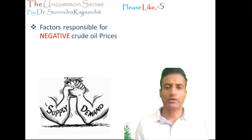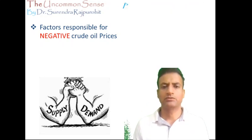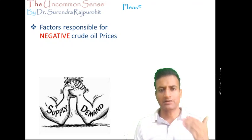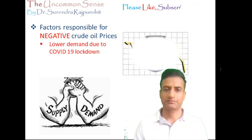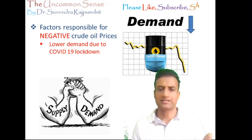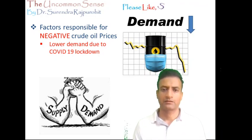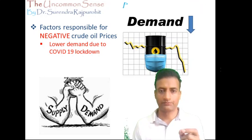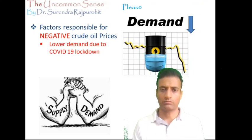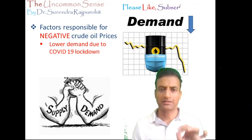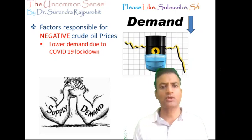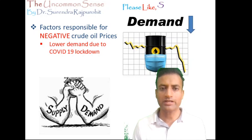Because of the lockdown imposed in most parts of the world due to COVID-19, there has been a drastic reduction in demand by around 60 to 70%. Agreed that due to the fall in demand, there will obviously be a fall in prices. But how much? Even if, at the extreme, we assume that demand has fallen to zero — although that is not the case in reality — theoretically, if demand falls to zero, prices may also go up to zero level. But how do you explain negative prices?